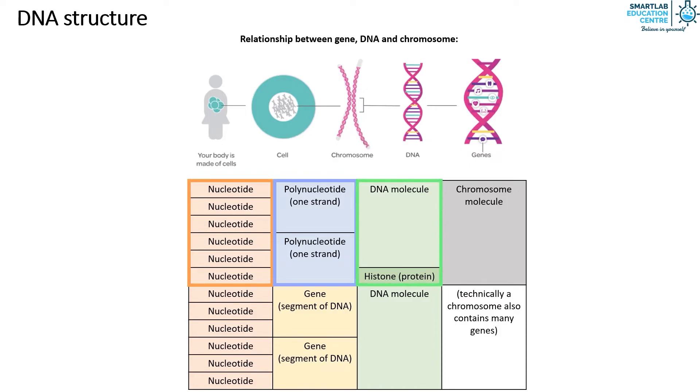The DNA molecule then winds around histone proteins to form chromosome molecules. We also know that a gene is a segment of DNA, thus a gene is made up of a few nucleotides as well. Since gene is a segment of DNA, many genes together make up DNA as well.